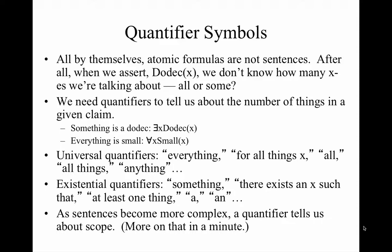Think about the universal this way: it says 'for all things X' — all, every, any. Our textbook prefers 'every' or 'everything,' and I'll follow that lead. The existential quantifier can be understood using 'there is at least one' or 'at least one thing,' but also 'some' or 'something.' Understanding which quantifier to use is often straightforward, but sometimes you need to use your understanding of ordinary language sentences to properly interpret which quantifier is intended.